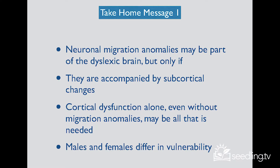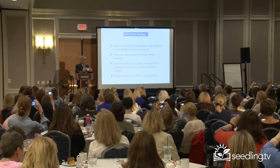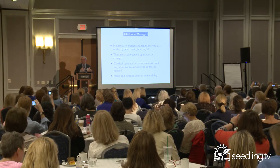Let's take some messages home. Neuronal migration anomalies may be part of the dyslexic brain, but not necessarily. We have some models in which we don't have neuronal migration anomaly but you produce some disordered cortical function — and maybe that's what's necessary. Sometimes neuronal migration anomalies are also associated with noisy cortical function.